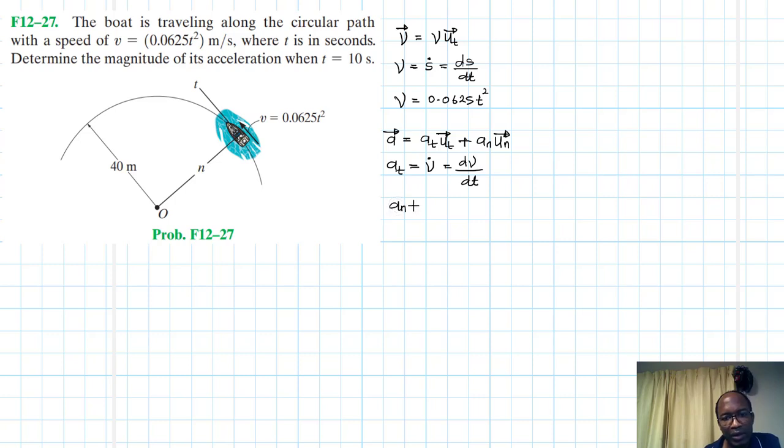And then an, this centripetal acceleration, is normal acceleration towards the center over this particular radius, is equal to velocity squared divided by rho, where rho is the radius of curvature. And if you want to know how this is derived, you can just get back to the book to just go and look through it.